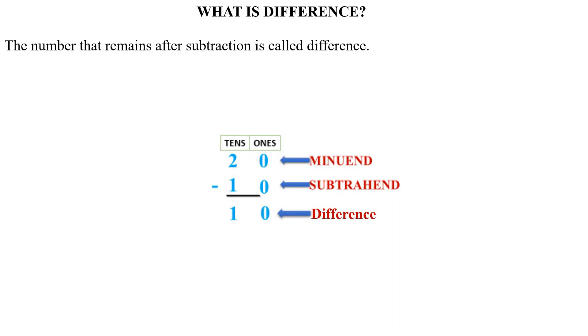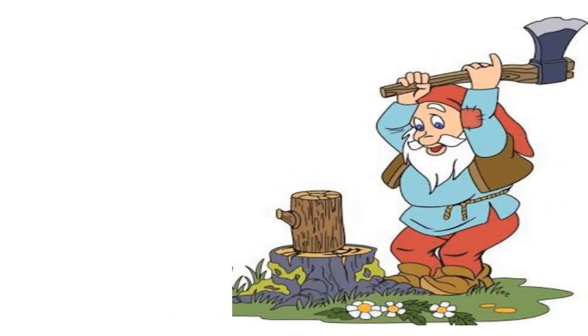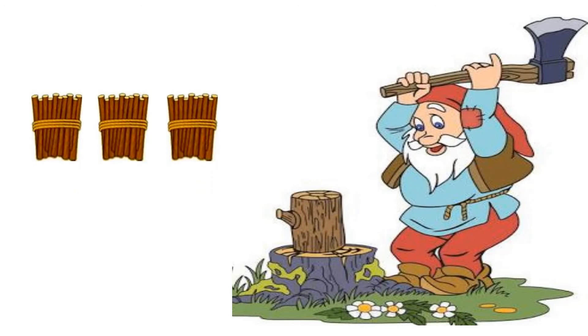Let's take one more example to make you clear the concept. There was a man named Bhanu. Bhanu collects wooden sticks from the jungle and sells them in the market. When he goes to sell them, he makes different bundles. Each bundle has ten sticks.